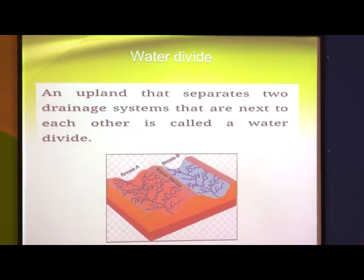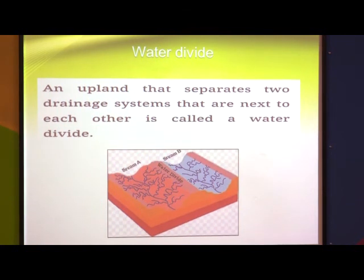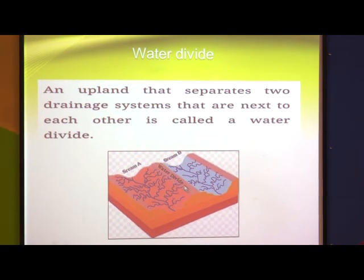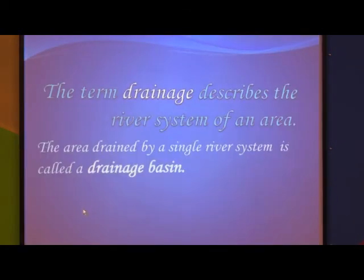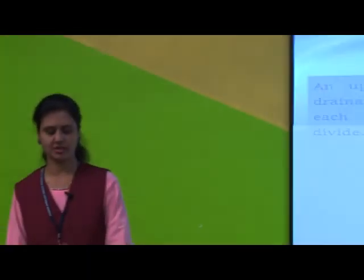The second concept is called water divide. Water divide means that upland area which divides or separates two drainage streams. Stream A is on one side and Stream B is on the other side, and because of this upland sector, both rivers are separated from each other. That middle portion is called the water divide.